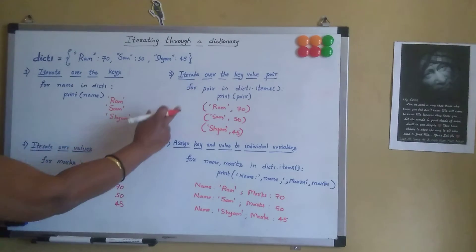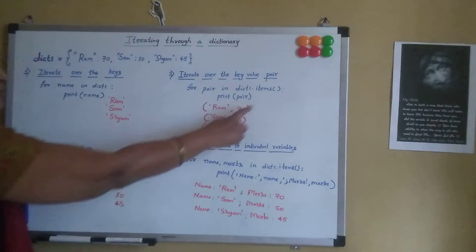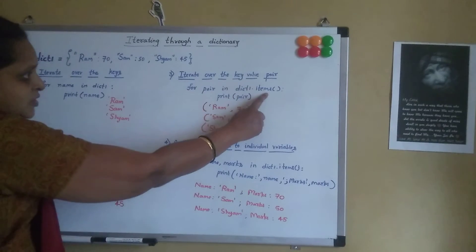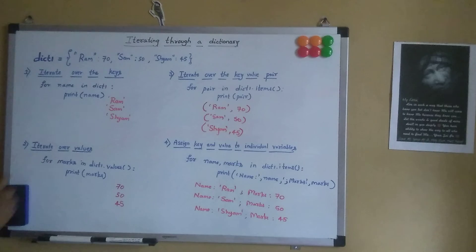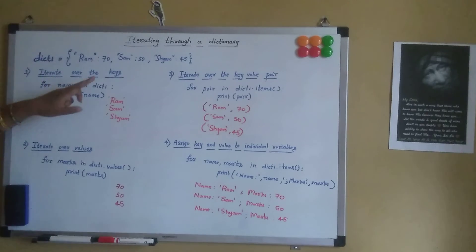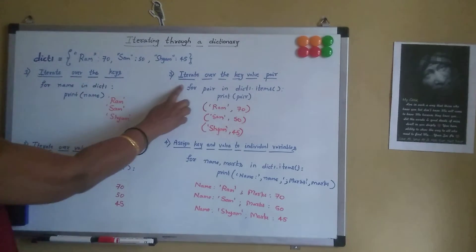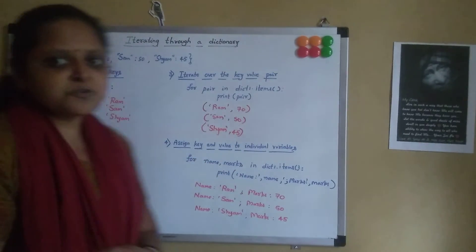In a single variable with tuple format, it holds the key-value pair together. To summarize: when we want both key and value, specify `dict1.items()`; when we want only values, specify `dict1.values()`; and when we want only the keys, just specify `dict1`. These are the different ways to iterate over a dictionary. Hope it is clear for you.